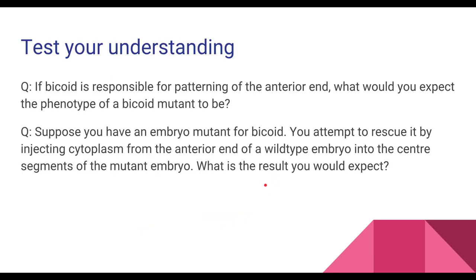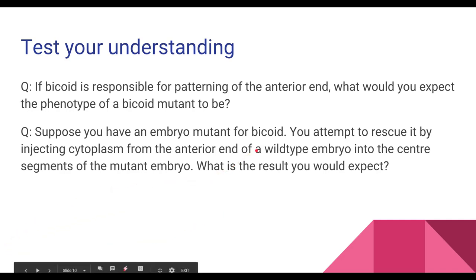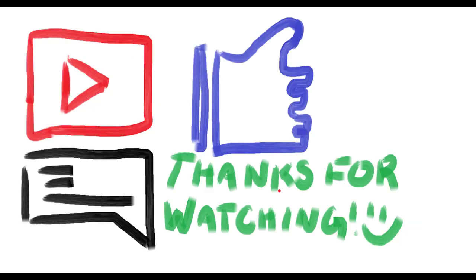We'll leave you with two questions to test your understanding. First: if bicoid is responsible for patterning of the anterior end, what would you expect the phenotype of a bicoid mutant to be? Second: suppose you have an embryo mutant for bicoid, and you attempt to rescue it by injecting cytoplasm from the anterior end of a wild-type embryo into the center segments of the mutant embryo — what result would you expect? Give those questions some thought, and we'll see you in the next video. Thank you!